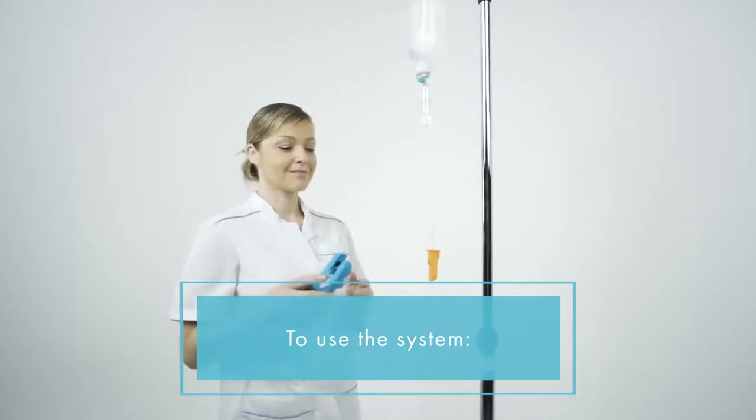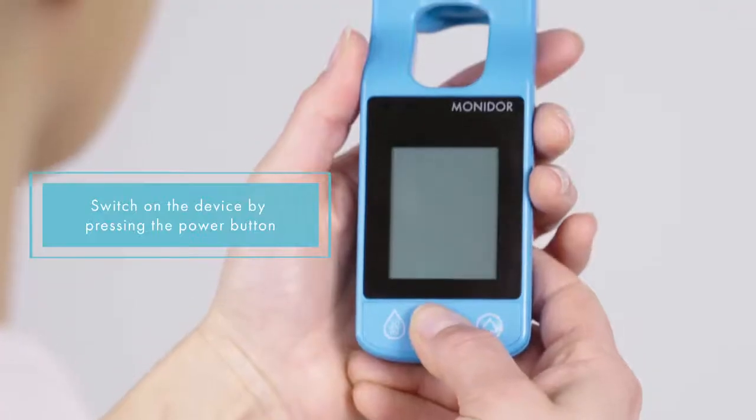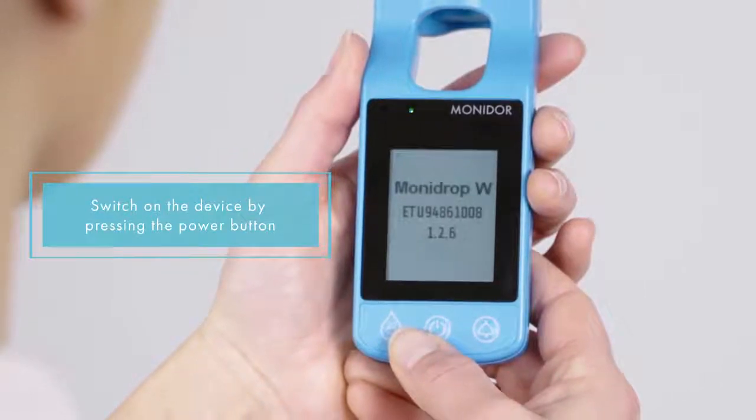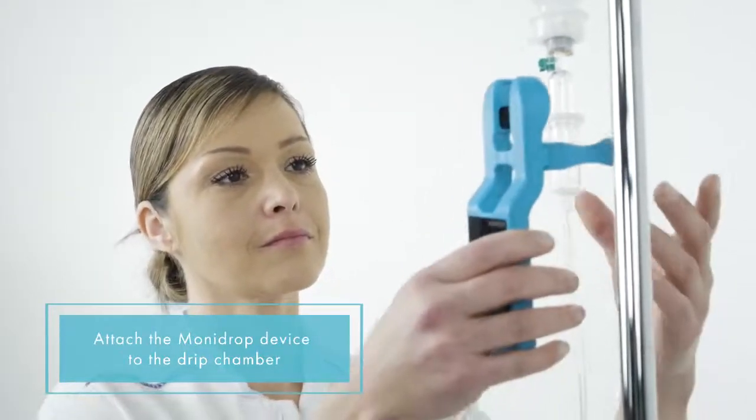To use the system, switch on the device by pressing the power button. Attach the MoniDrop device to the drip chamber.